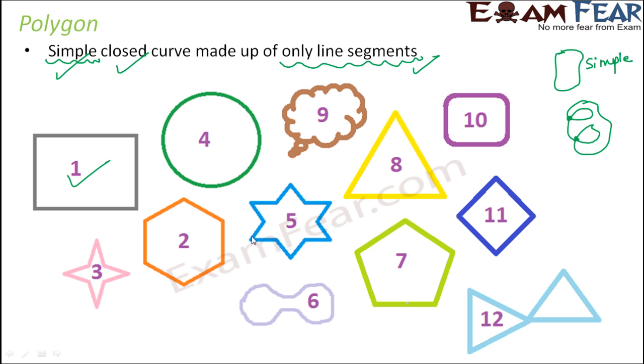Let's look at number two. So here, this is also a closed curve because it encloses this region inside. It is also made up of only line segments. There are six line segments which make this. This is also a simple curve because it doesn't intersect itself. So this is also a polygon.